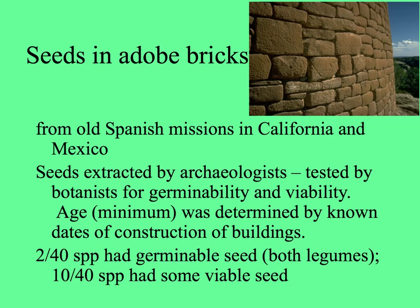The seeds may have been in the soil longer than that, so these were probably more than 200 years old at least. Two of the 40 species taken out had seeds that germinated — the botanists grew plants from these. Ten of the species had some viable seed by tetrazoleum stain.